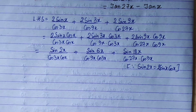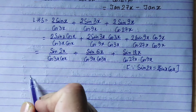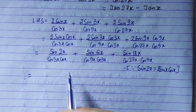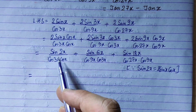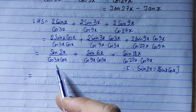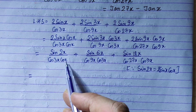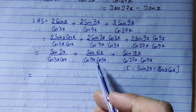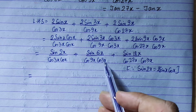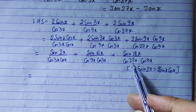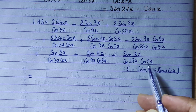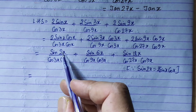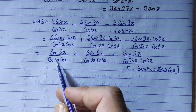Now let us note that we will work with the numerator. This is 3x minus x. This is 6x, which is 9x minus 3x. Lastly, 27x minus 9x equals 18x. Now let us note the differences in the numerator.